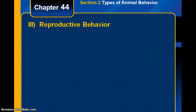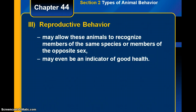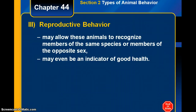The third type of behavior is called reproductive behavior — behavior used towards reproducing. These reproductive behaviors may allow animals to recognize members of the same species or the opposite sex. It helps them prepare for mating and indicates that an animal might be a good mate because of good health.